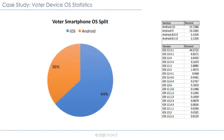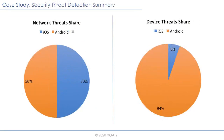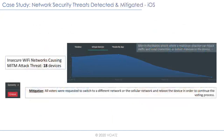This is data from one of our recent elections where a few thousand people participated. The device split was predominantly more iOS than Android. In terms of threats detected on the network side, the split was pretty even at about 50-50. However, on the device side, we saw a lopsided share of threats being detected on Android, which could be a function of the devices being used or unique factors specific to this election.